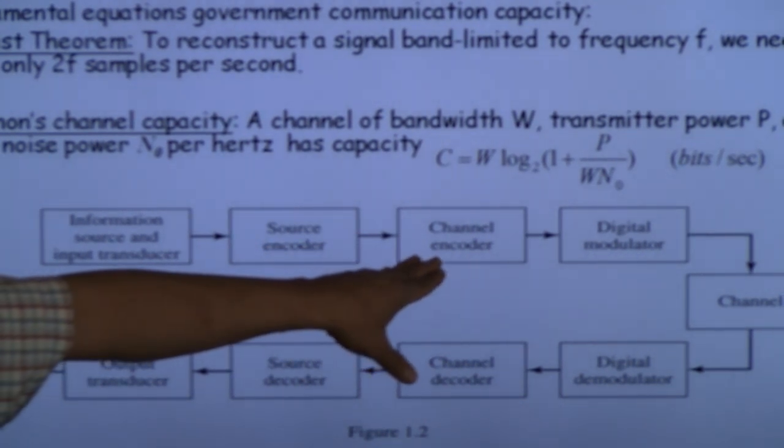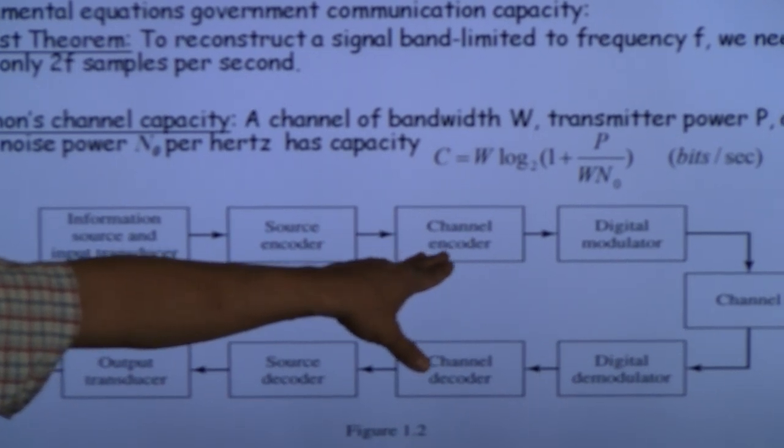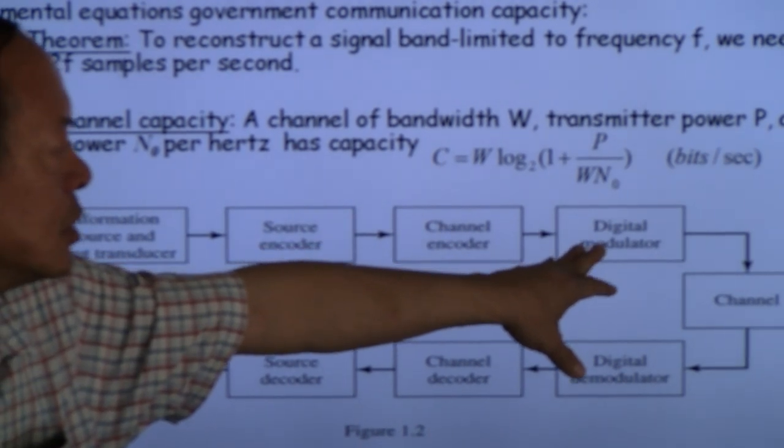Afterwards, you may want to add a channel encoder in order to make the signal more robust to channel noise before you pass it to the digital modulator.